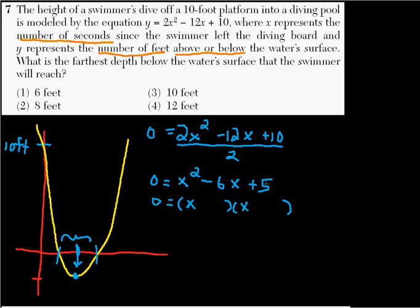Now we need two numbers that multiply to positive 5 that add to negative 6, so the only integers that multiply to positive 5 are 5 and 1, and we have a negative and a negative, because negative 5 times negative 1 is positive 5, negative 5x, negative x gives us negative 6x. Okay, so that tells us the intercepts are at x equals 5 and x equals 1.